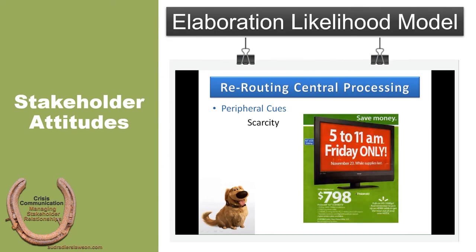The final peripheral cue is scarcity — the doorbuster sale, coupons, while supplies last. It's based on both value and availability. If something seems scarce, like it's hard to come by, it seems better, like you should go do it or go get it. So to recap: scarcity, authority, liking, social proof, tradition, and reciprocation are all components of the peripheral cues designed to try and get back to central processing.